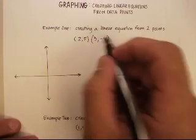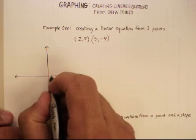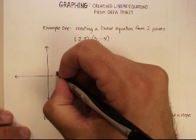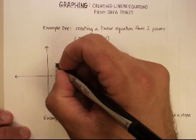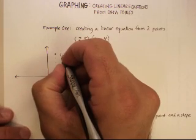Well, according to this, one of the points is 2, 5, so I should go 2 along the x, and then 5 along the y. 1, 2, 3, 4, 5. So, there's one point, and it's 2, 5.